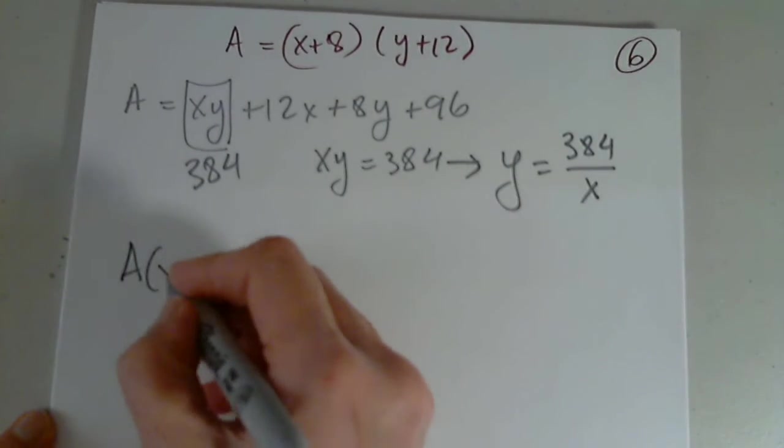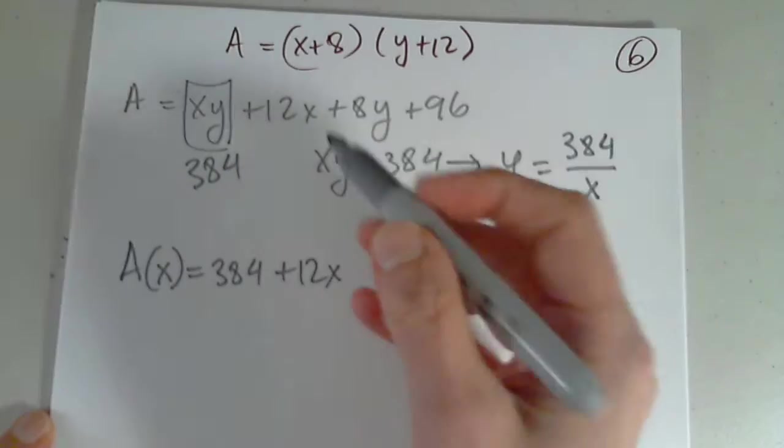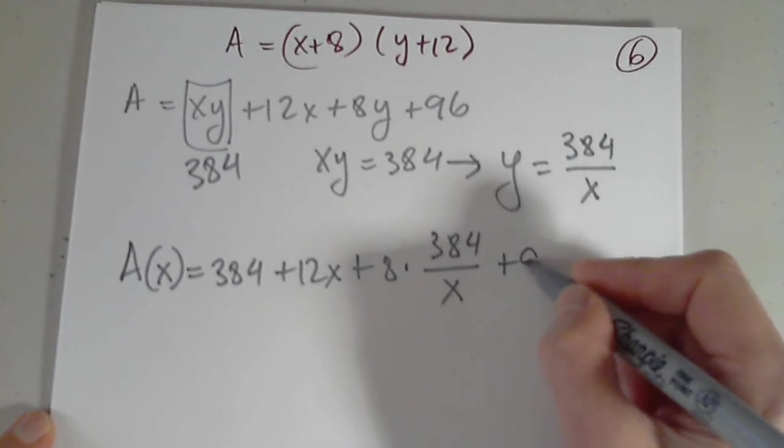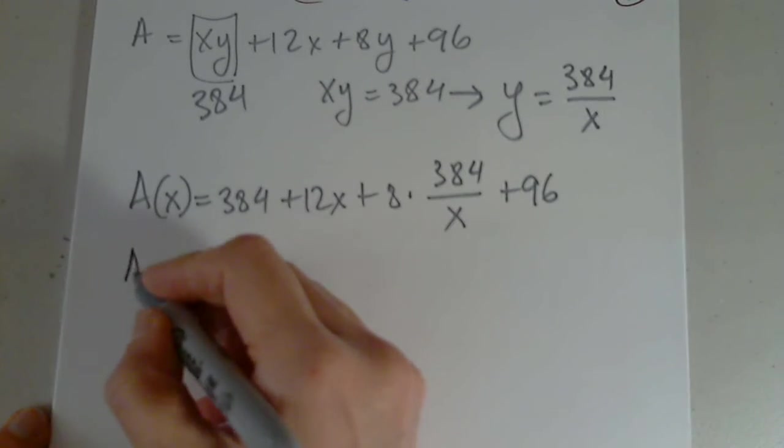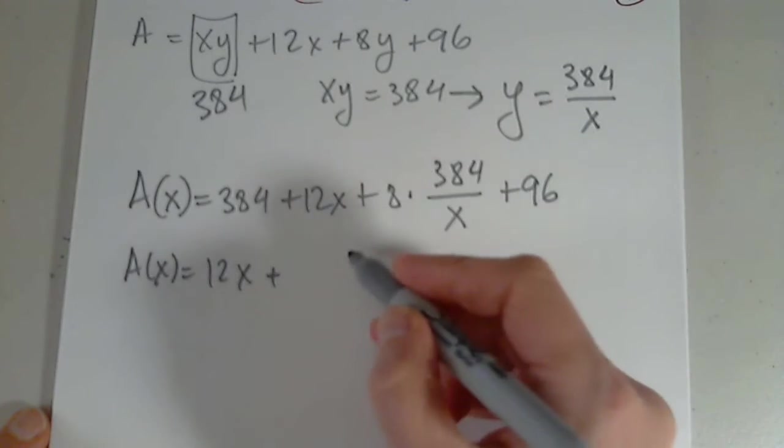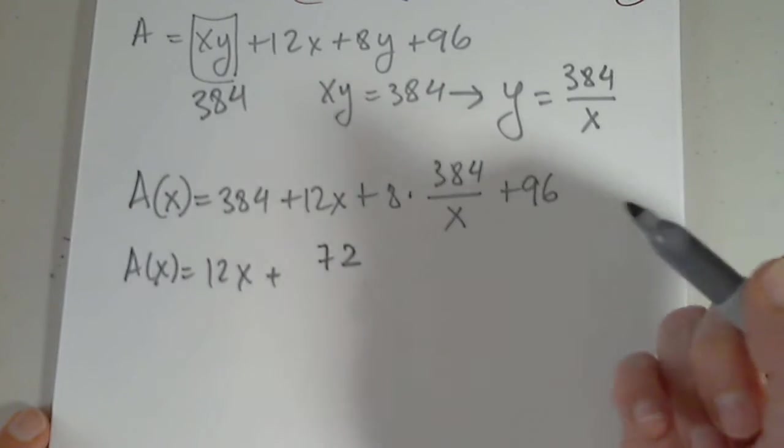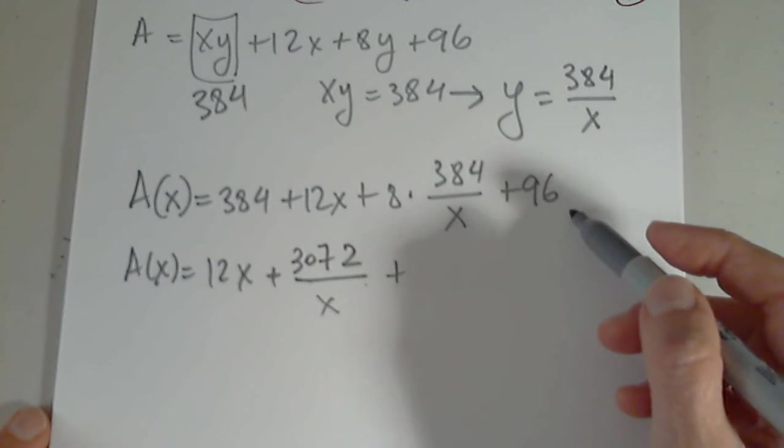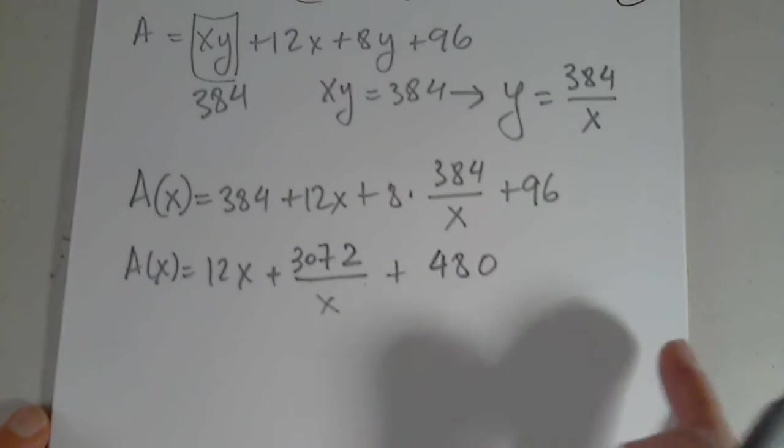Let's say I'm dividing by x. And now the area is indeed a function of x. This was replaced by 384. Plus 12x is 12x. Plus 8 multiplied by y. 384 over x plus 96. So the area is 12x plus 3072 over x plus 480. Correct me if I'm wrong with my numbers, please. Don't let me make an error.